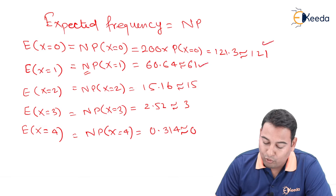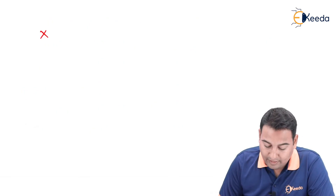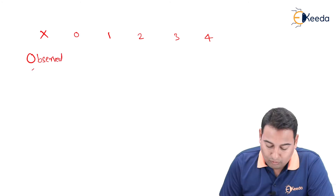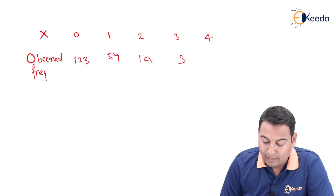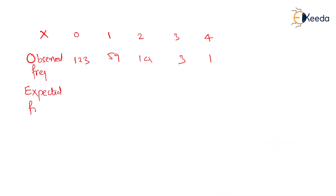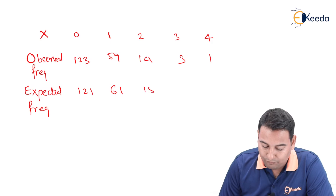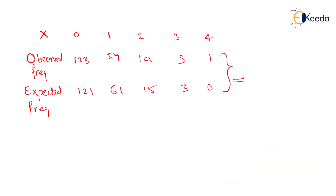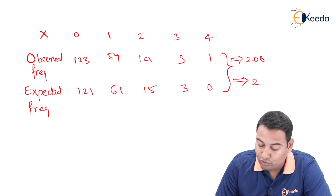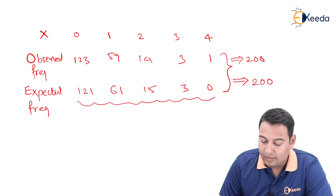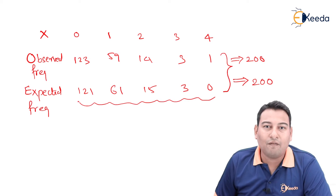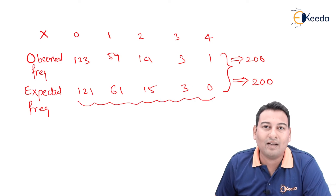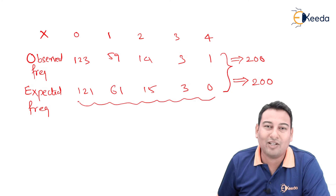Let us put these values in the table. x is the random variable with values 0, 1, 2, 3, and 4. The observed frequencies provided in the problem are 123, 59, 14, 3, and 1. The expected frequencies we calculated are 121, 61, 15, 3, and 0. To check whether your answer is correct, add the expected frequencies — they should sum to 200, just like the observed frequencies. This problem is very important and will be required in the chi-square test, which will be discussed in later videos. Hope you understood the problem. Thank you.